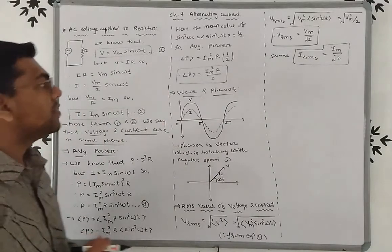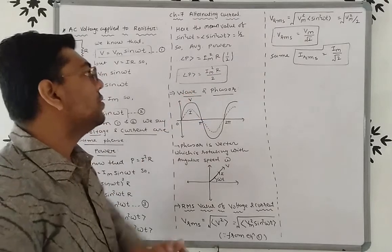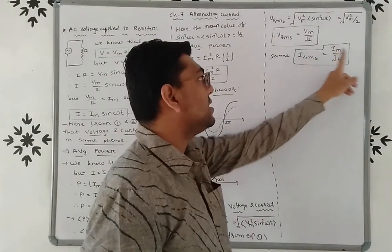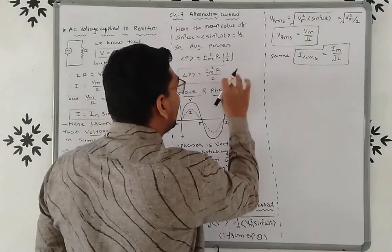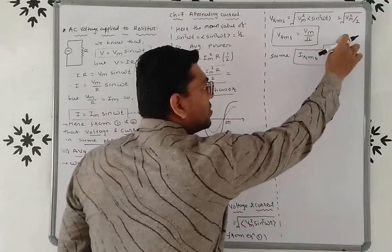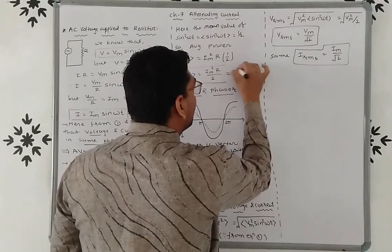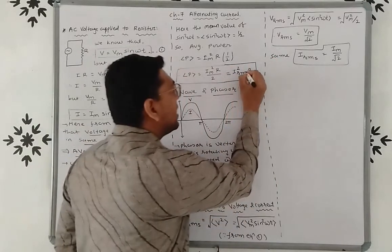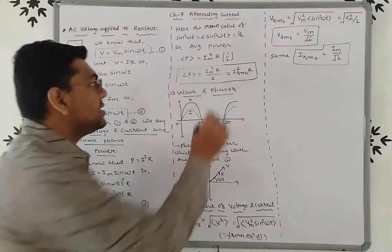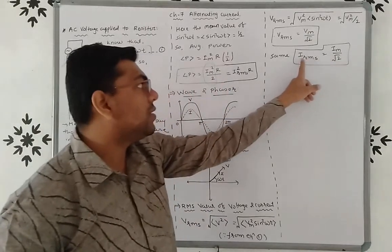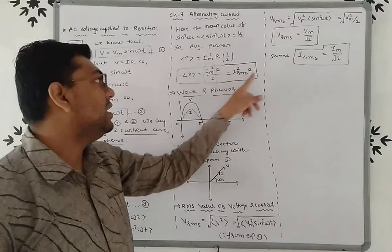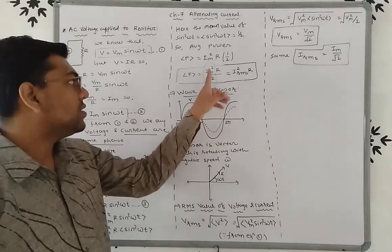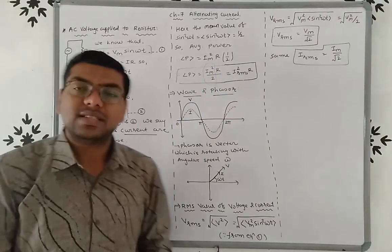We derived average power = Im²R / 2. If we square the equation Irms = Im / √2, we get Irms² = Im² / 2. So Im²/2 = Irms², and therefore average power = Im²R / 2 = Irms² · R. The equation of average power is Im²R / 2 = Irms² · R.